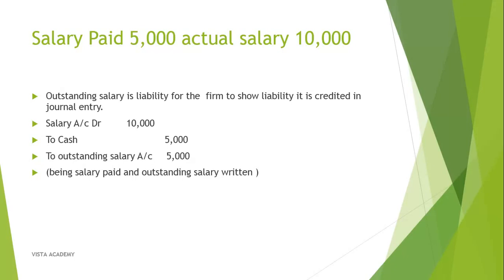In the next entry: salary paid 5,000, actual salary 10,000. Salary is an expense, but in this case we are just paying 5,000. The salary which is not paid is an outstanding salary, and it is a liability for the firm and is credited. So the entry will be: Salary Account debit with 10,000; cash going out is only 5,000, and the remaining is the outstanding salary.